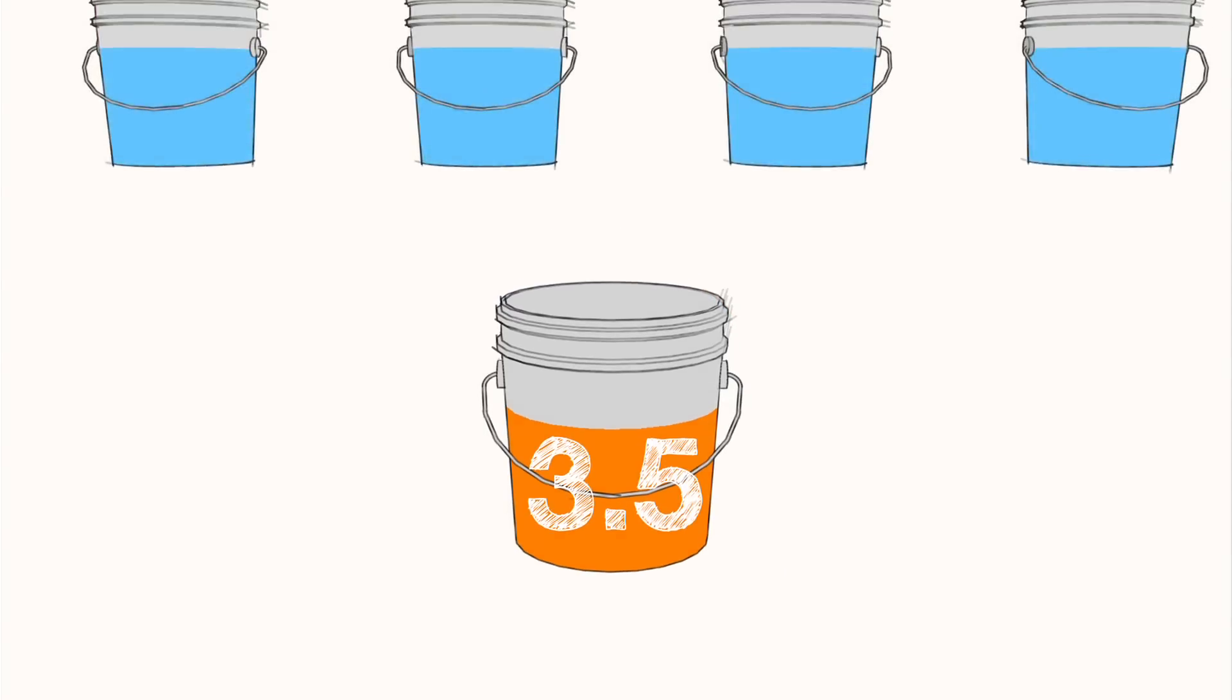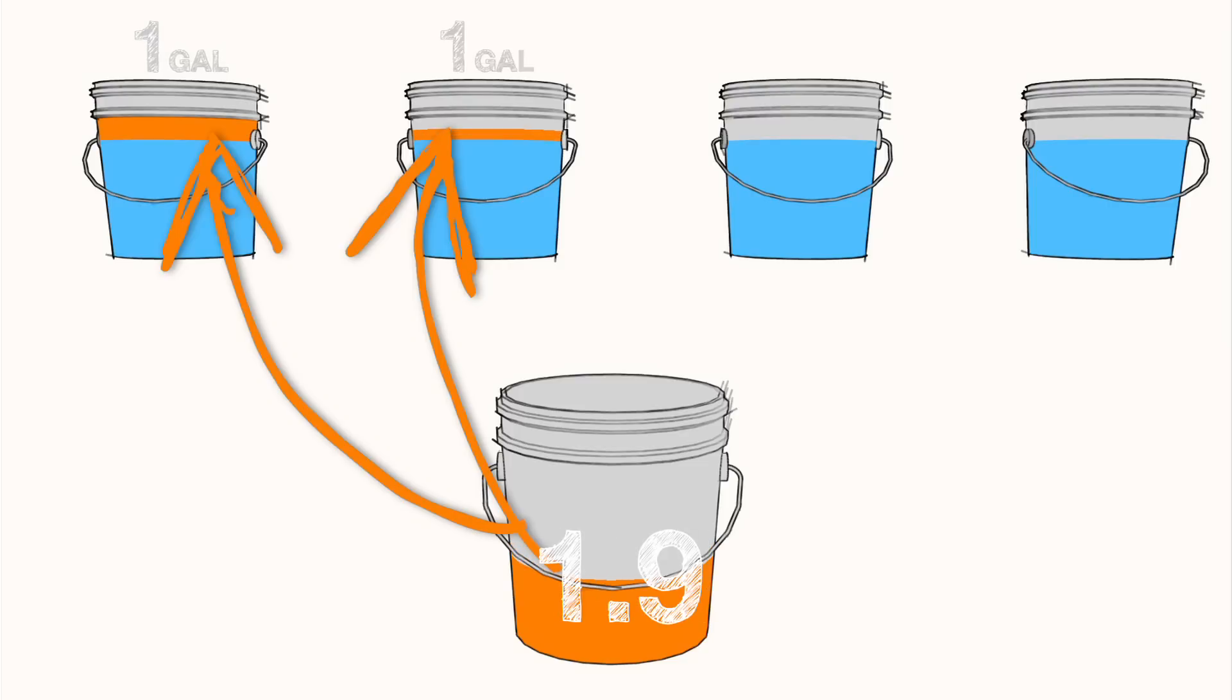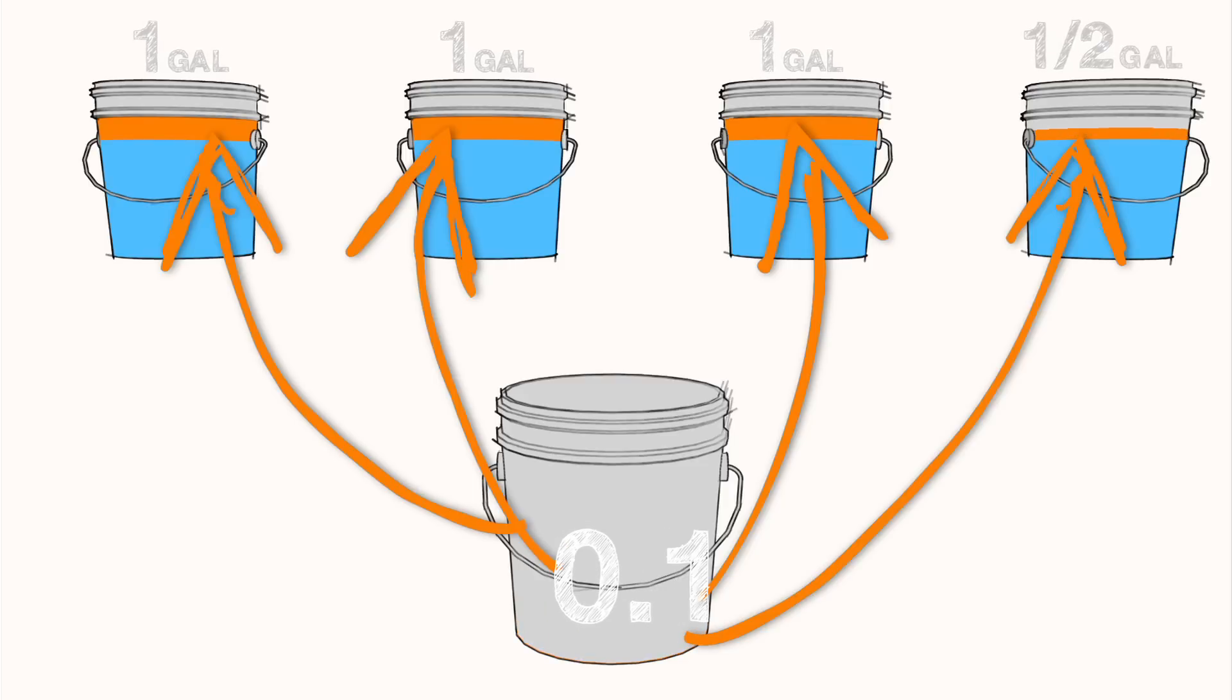Since we need one five gallon bucket for each gallon of concentrate, we will distribute the 3.5 gallons into four buckets: three buckets with one gallon in each and the fourth bucket gets the half gallon.